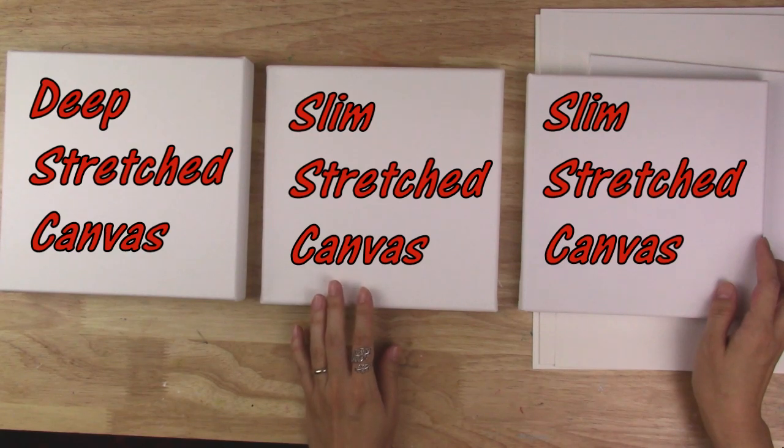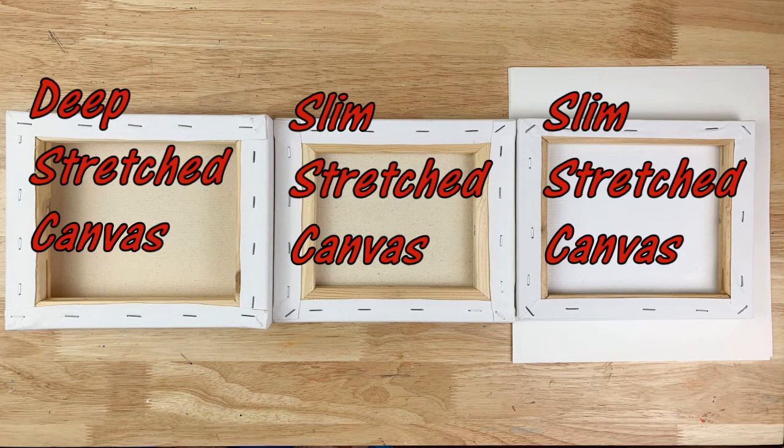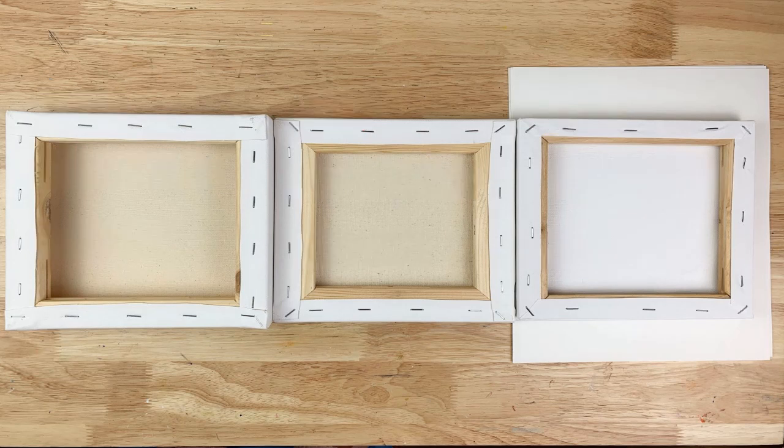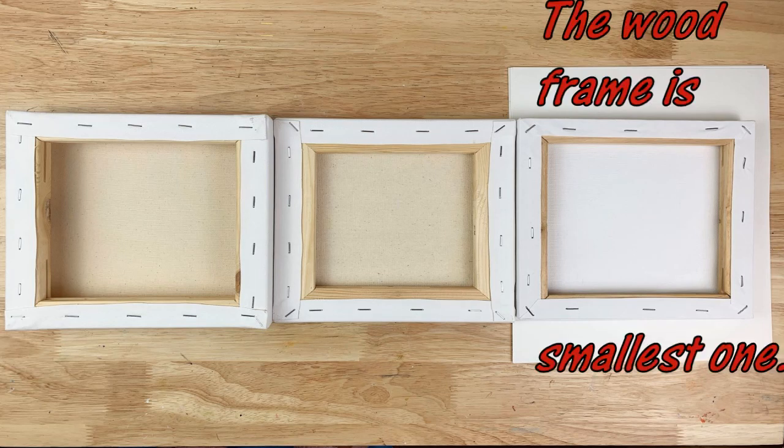These two are slim stretch canvases. This one is deep stretch canvas. The main difference is in the back. You can see the difference between the wood frame. Just look at the wood frame. This one is the smallest one and also it's really light.